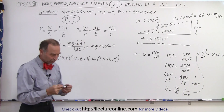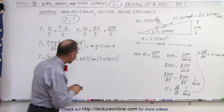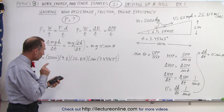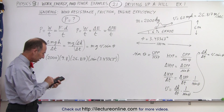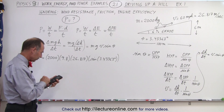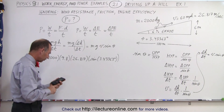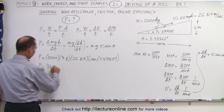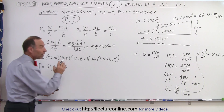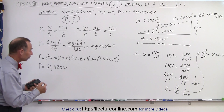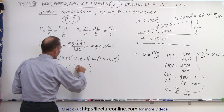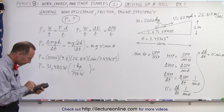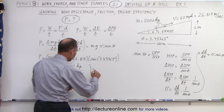We're perhaps exaggerating a little with those decimal places, but that's quite alright. Taking the sine of 3.43363 degrees, multiplying by 26.817, then by 9.8, then by 2,000, gives us a power requirement of 31,480 watts. To convert to horsepower, we divide by 746 watts per horsepower, which gives us 42.2 horsepower.